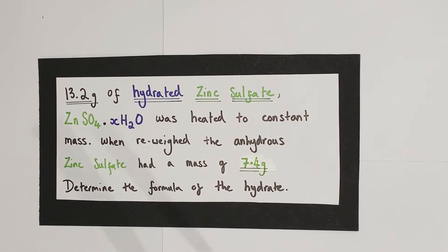13.2 grams of hydrated zinc sulfate containing that water of crystallization as shown by the formula given. ZnSO4 is the formula of the anhydrous salt and the dot stands for water of crystallization. Those water molecules bound up as part of the ionic structure and x shows that I don't know the number of moles of water present. That's what I'm trying to find out. That hydrated salt was heated to constant mass using that method just seen.